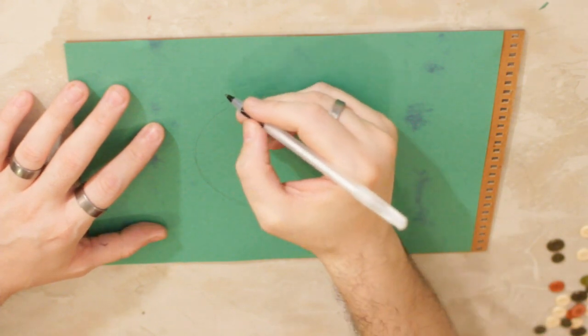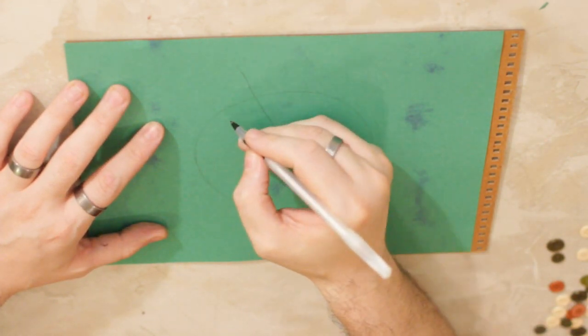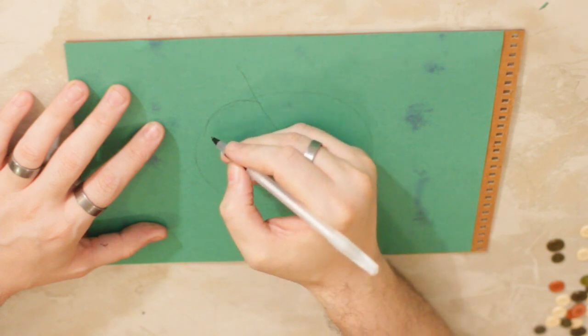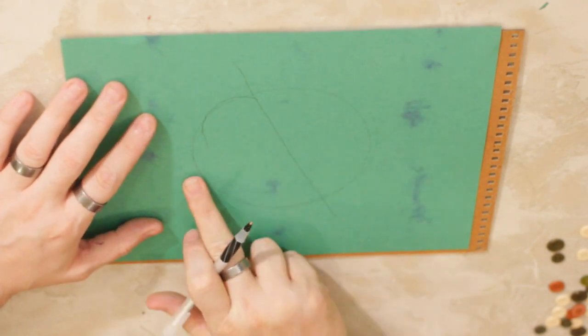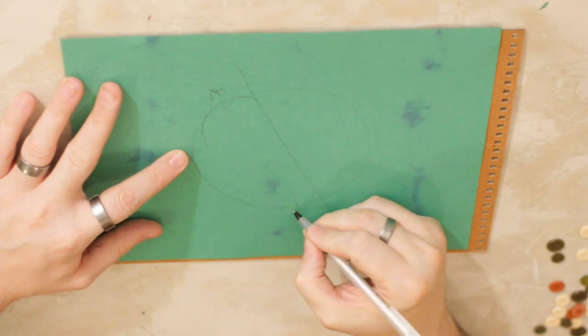So you start out with a circle for an apple, but then what we're going to do is pretend that we've squished it in. I'm going to give you a center line and then let's just do one of these and pretend it got squished in. If you squish from this side, the tops and the bottoms are going to go out.